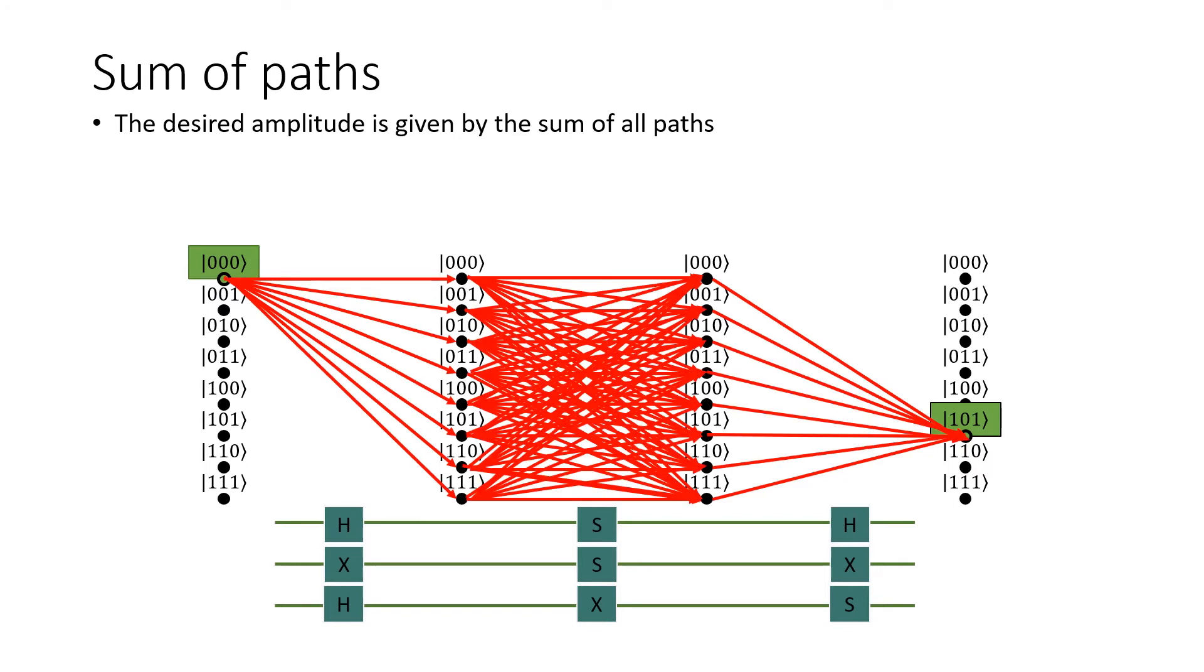For a circuit with n qubits and depth d, the number of paths is equal to 2 to the power of n times d minus 1. In this example, there are 64 different paths.